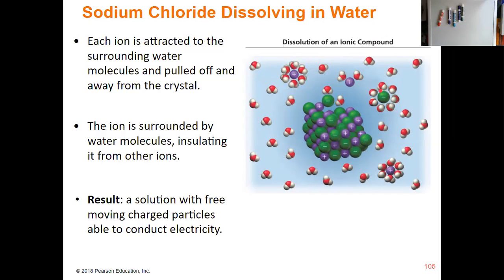The sodium ion gets surrounded in solution. The oxygen portions of the water molecules kind of get attached — not bonded, but like a little magnet — surrounding the sodium ion. All the hydrogen ends of the water molecules end up surrounding the chloride ion. That keeps it insulated from other ions, so it's not going to reform solid sodium chloride. Now they're insulated ions in solution, and they're able to conduct electricity through the solution because they're operating like free charged particles.